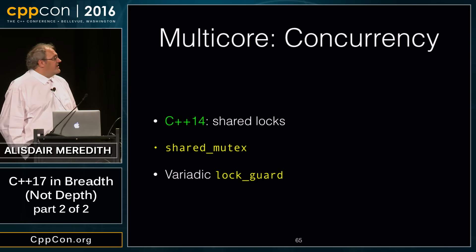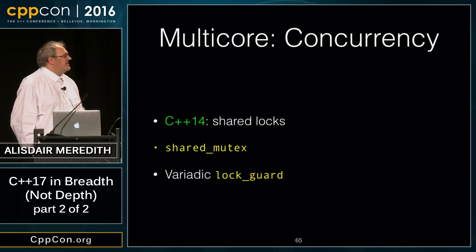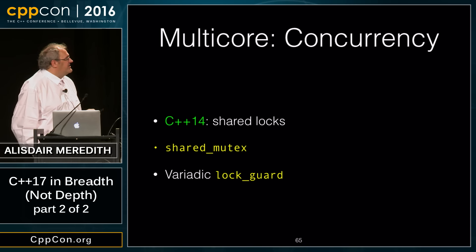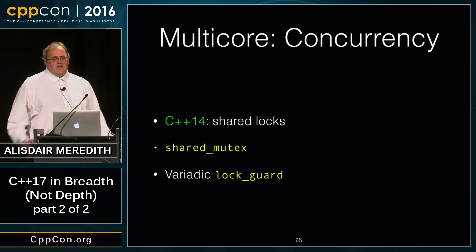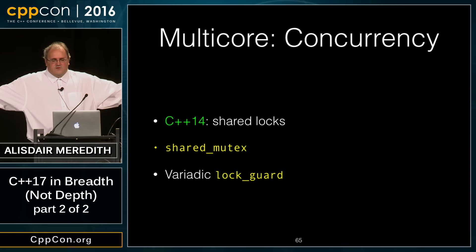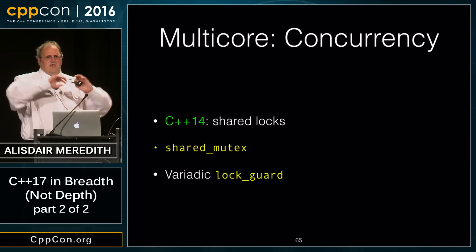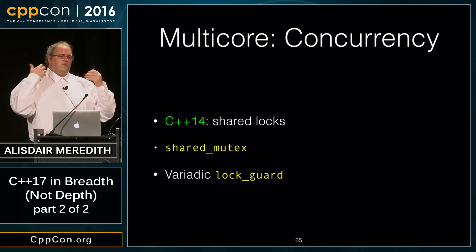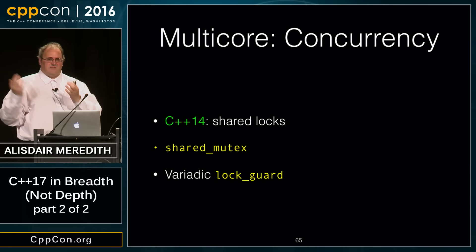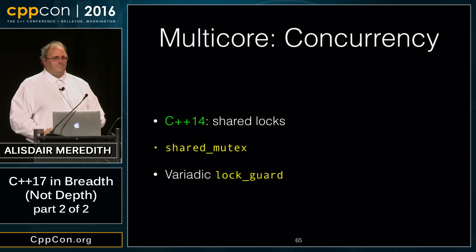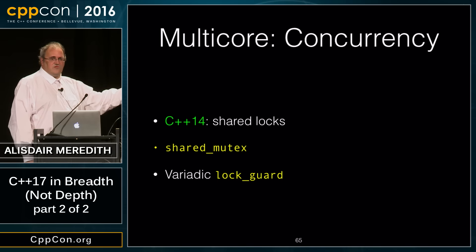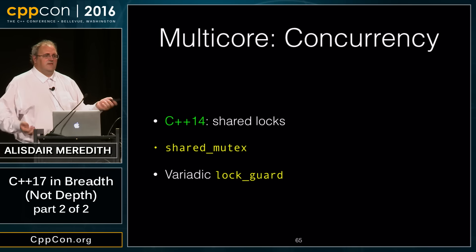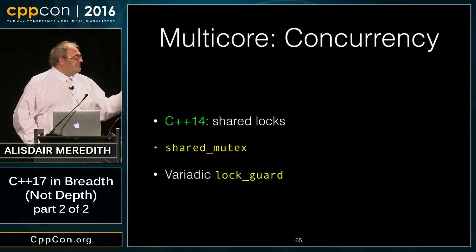On the concurrency side: C++14 added shared locks; C++17 adds shared_mutex and a variadic lock_guard. The variadic lock_guard lets you say here are three, four, or five mutexes I want locked — make sure you acquire them in the same sequence every time, which should resolve potential deadlock risks.